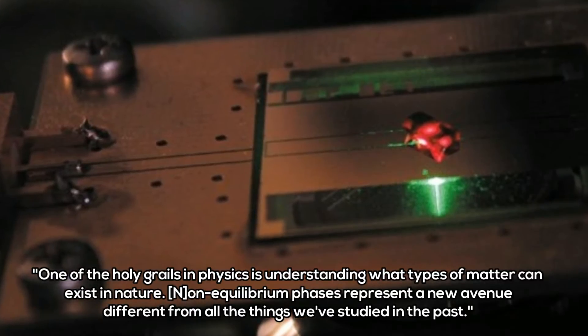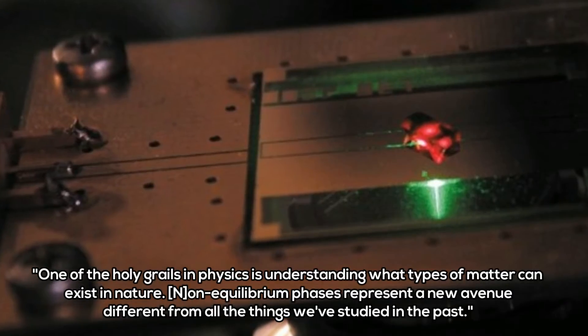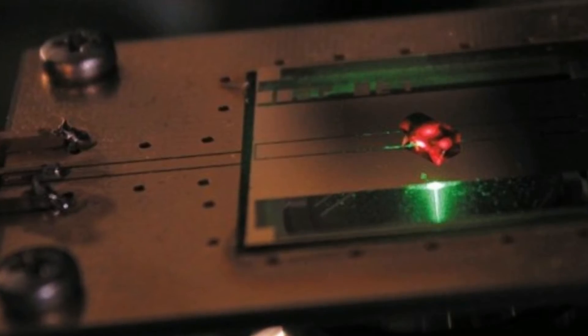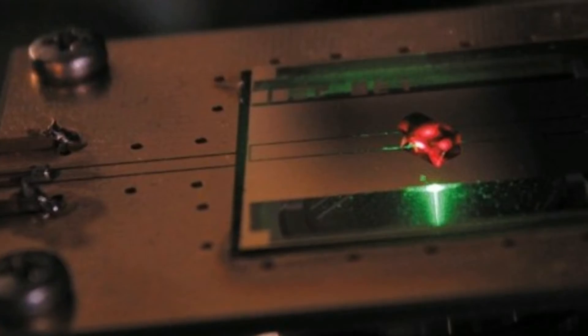First proposed by Nobel Prize-winning theoretical physicist Frank Wilczek back in 2012, time crystals are hypothetical structures that appear to have movement even at their lowest energy state, known as a ground state.